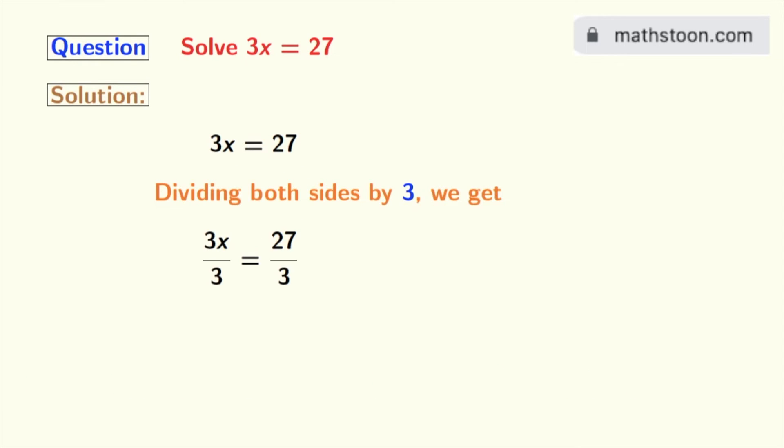Doing so we get 3x by 3 is equal to 27 by 3. Now in the left hand side 3 gets cancelled and we are left with x. And in the right hand side 27 by 3 is 9. So finally we get x is equal to 9 as our answer.